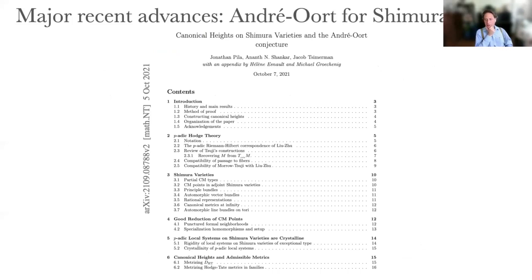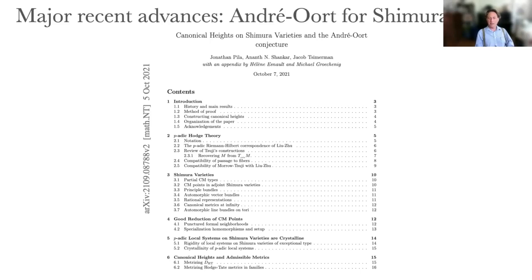The first major recent advance is that the André-Oort conjecture was not totally solved by Jonathan Pila in his work on modular curves — he solved an important special case, but a special case. Over the years the methods introduced were refined, and bits and pieces successively fell. It was only this past October that the full conjecture was completely resolved, in the paper by Jonathan Pila, Shankar, and Tsimerman, where they completely resolve the André-Oort conjecture for all Shimura varieties, pure and mixed.